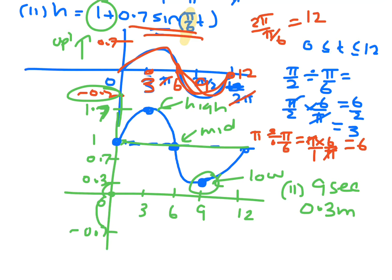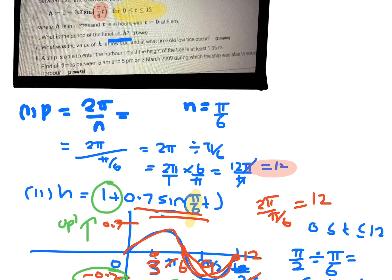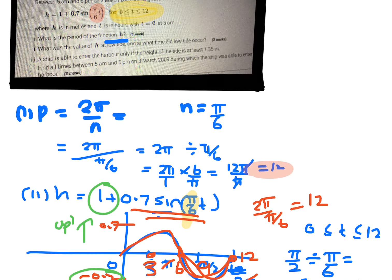So the third part of this question says a ship is able to pass the harbour when it is at least 1.35 metres. Find all the times between 5 a.m. and 5 p.m. on March 3rd, 2009, during which the ship is able to enter the harbour.